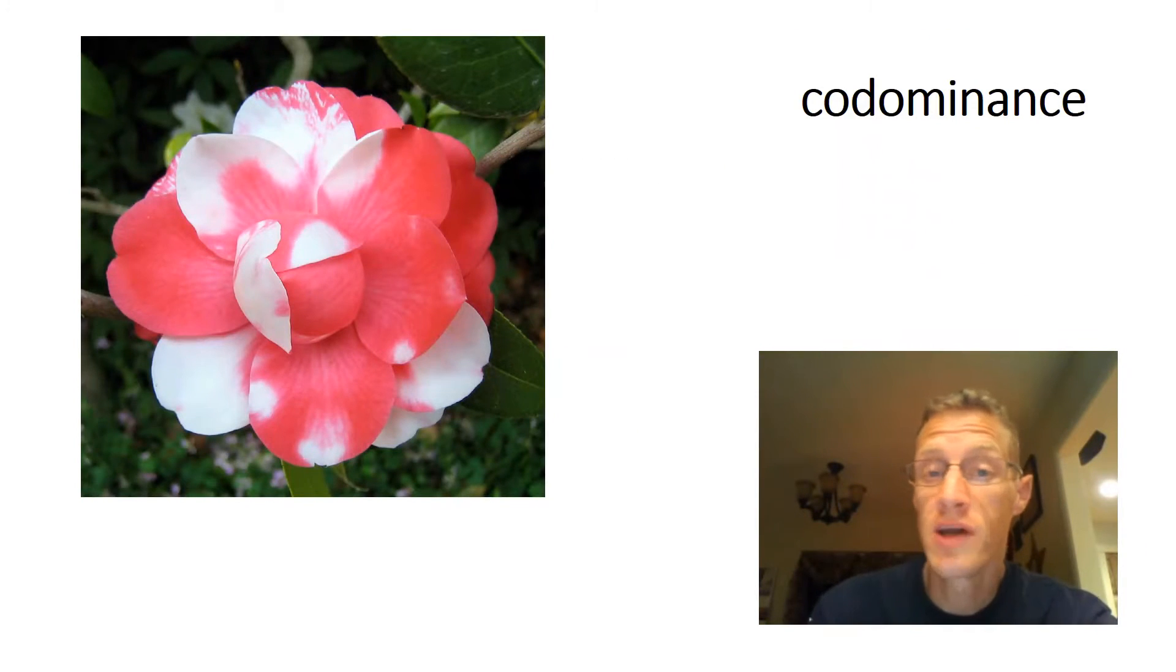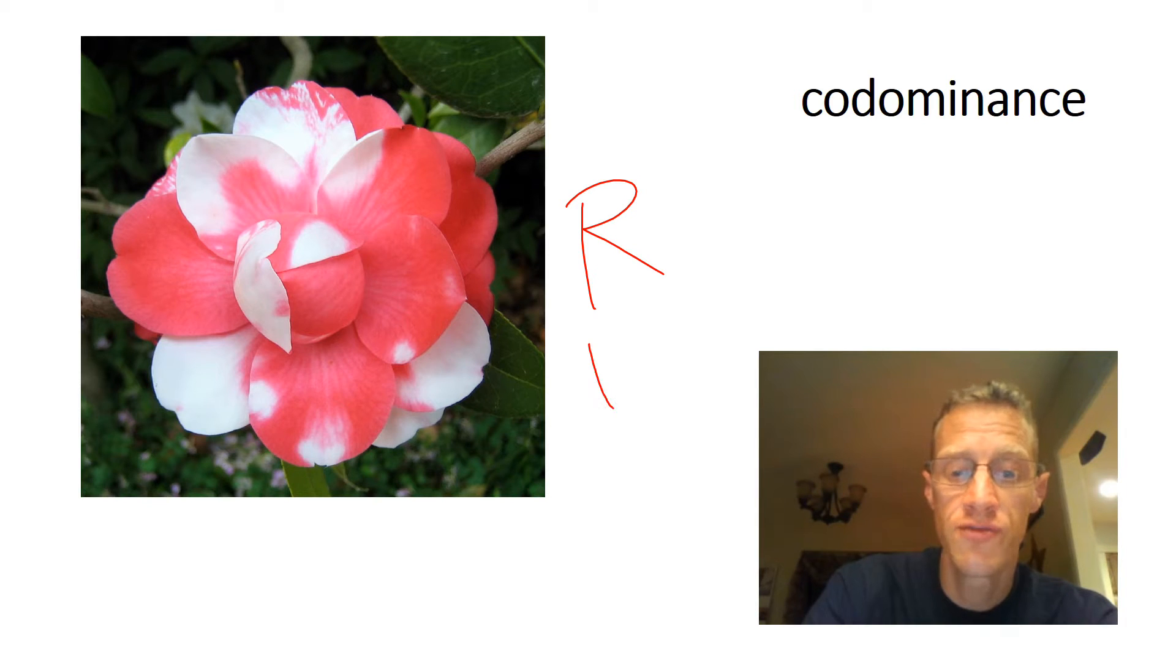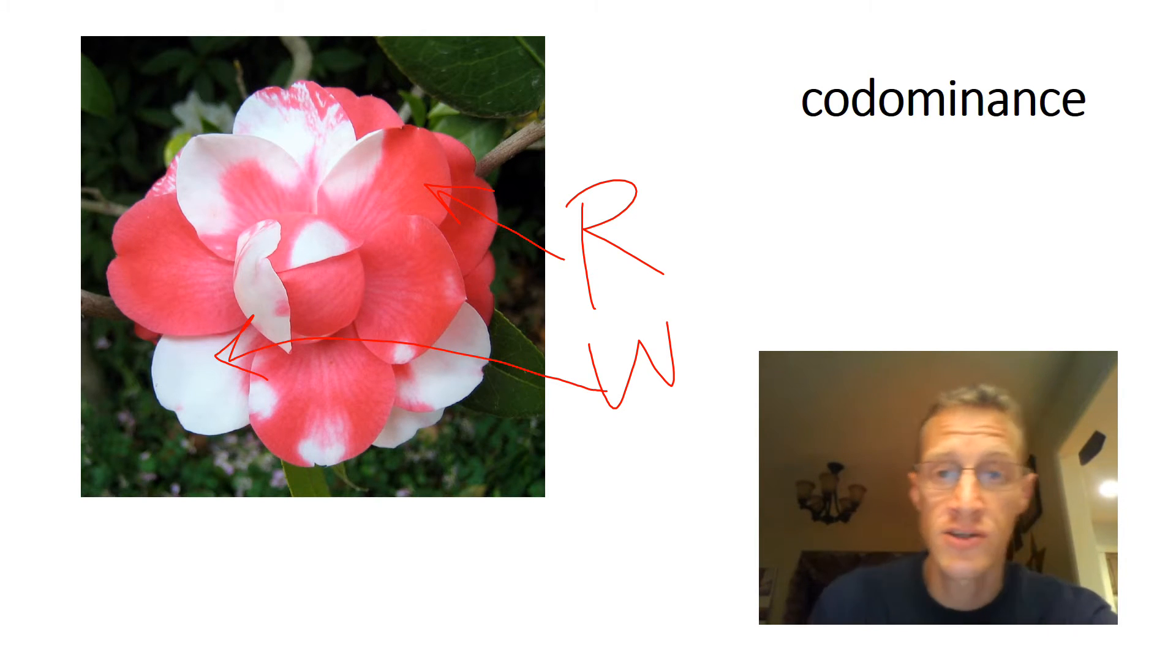Another deviation from the dominance model is called codominance. And this is where two different alleles each control a trait separately. In this camellia flower, for example, there is a gene for red and a gene for white. But if you notice, the gene for red is being expressed by some of the cells and the gene for white is being expressed by other cells, resulting in a sort of patchy appearance. And this is different from incomplete dominance.